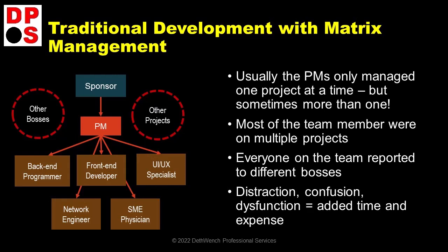But PMs weren't the only ones distracted. Team members were distracted because none of us actually reported to the PM. In fact, no one reported to the PM. We all had bosses out there somewhere who were not on the Gantt chart, to whom we reported. And they also required things of us that were not part of established projects. So basically, not only did we have all this disconnection, we had all this distraction. Distraction led to confusion, led to dysfunction, and all that led to added time and expense we needed to allocate to the project.